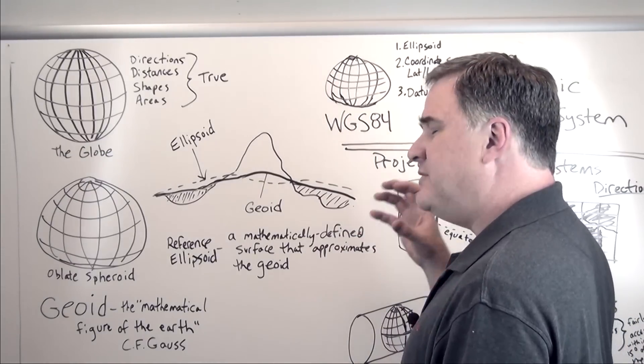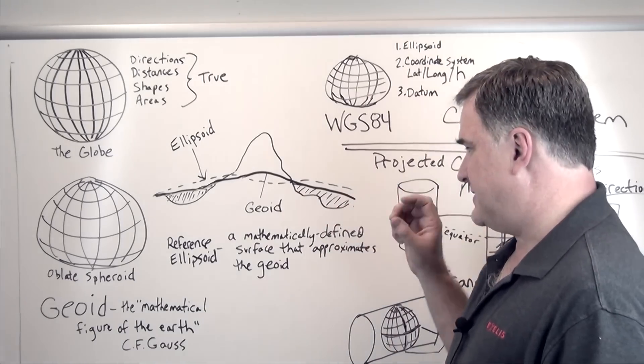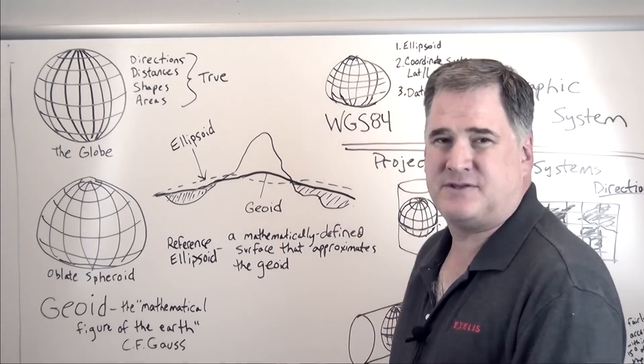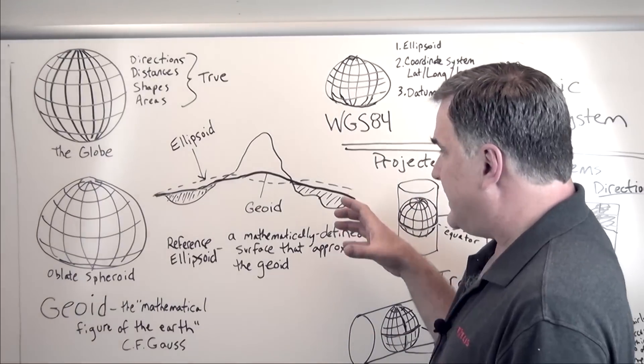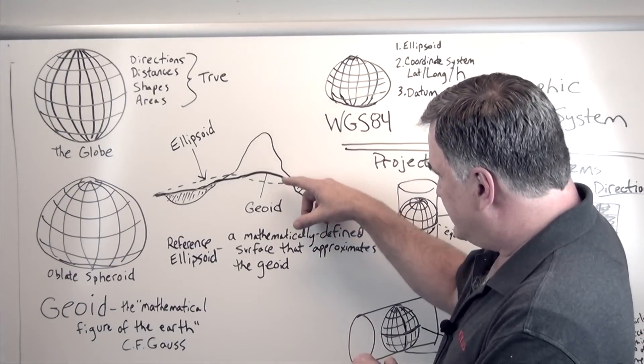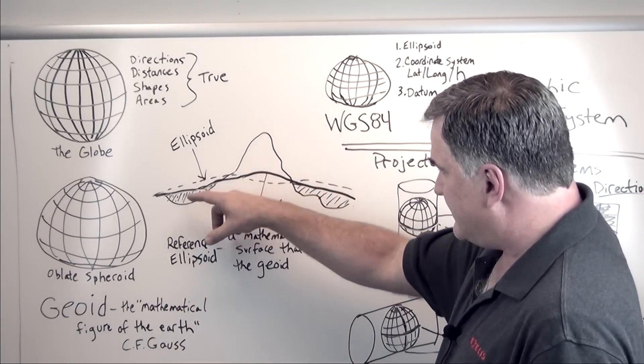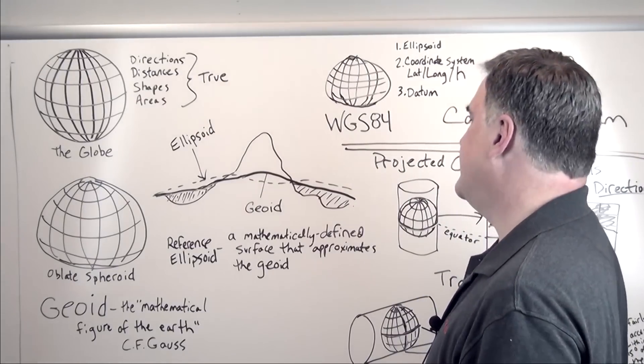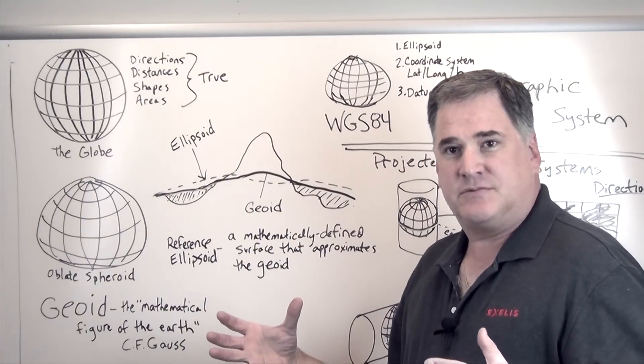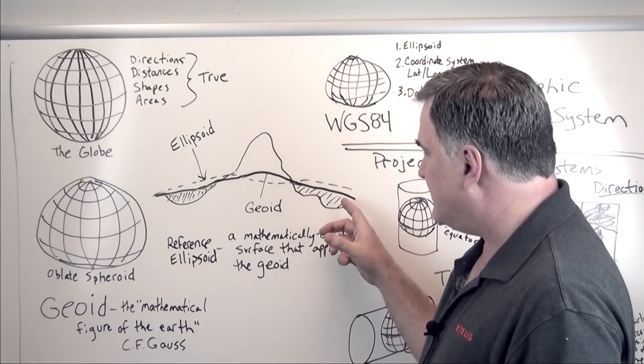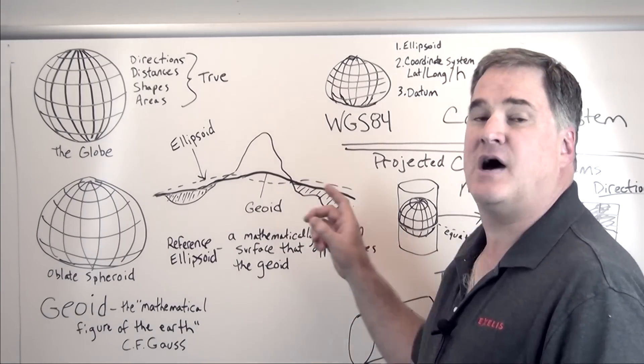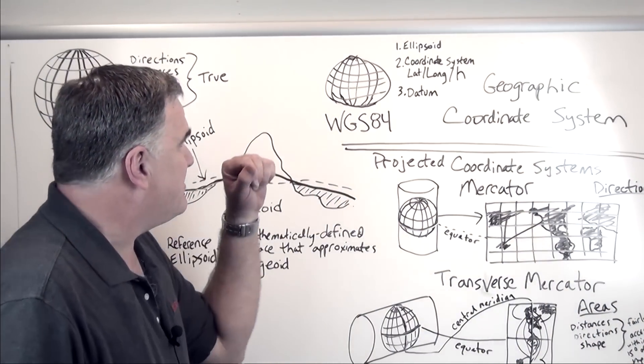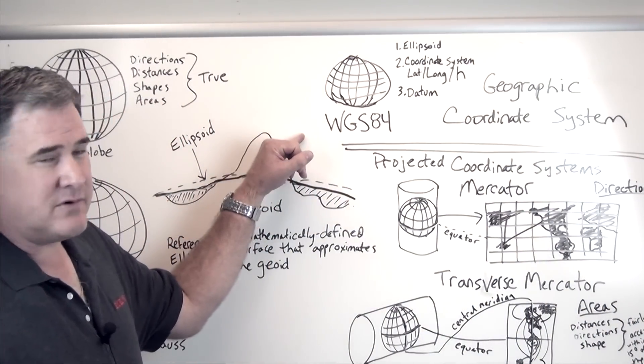But we need to get, in order to do some mapping, we can't just rely on the geoid. We need to get something that's called a reference ellipsoid. And that's a mathematically defined surface which approximates the geoid in some way. We can choose a reference ellipsoid that really lines up pretty well with the geoid in some small area of the earth, like we've got modeled here in this cartoon. Or we can choose an ellipsoid which does its best to approximate the geoid over the entire globe.